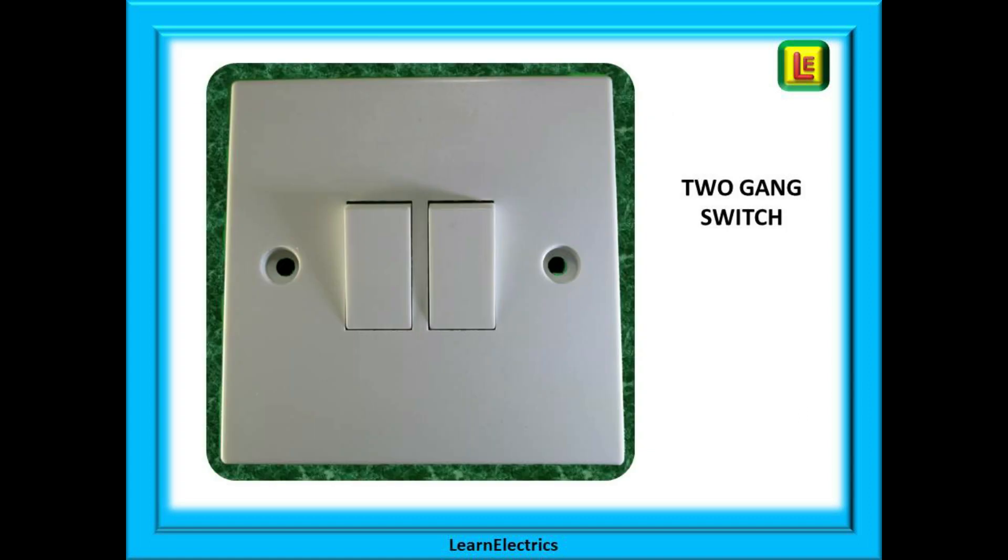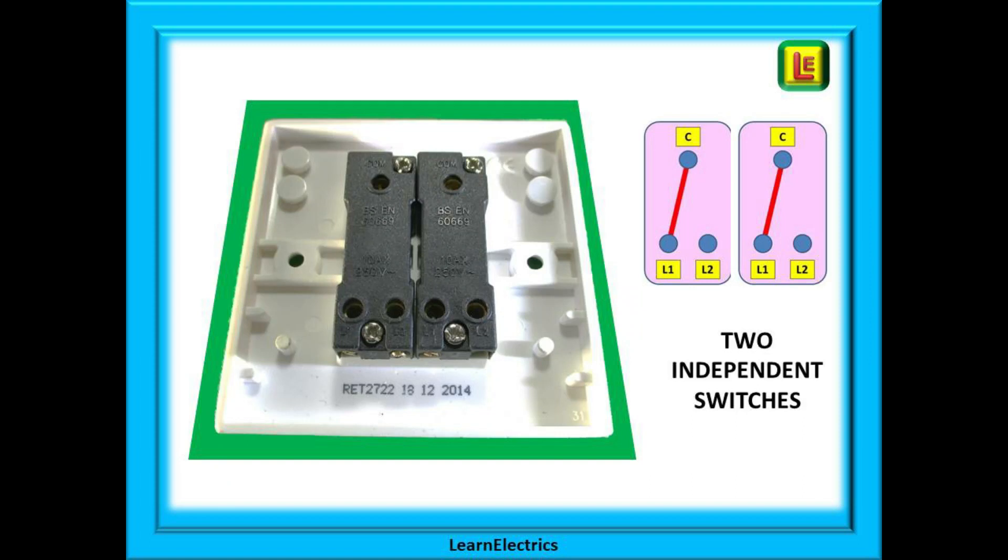Here we are showing a two-gang switch, two switches in one accessory, and you will come across these quite often. The reverse of the two-gang switch shows that it is made up of two independent switches. The operation of each switch is completely separate from the other switch. Apart from being in the same plastic molding, there is no physical or electrical connection between them.